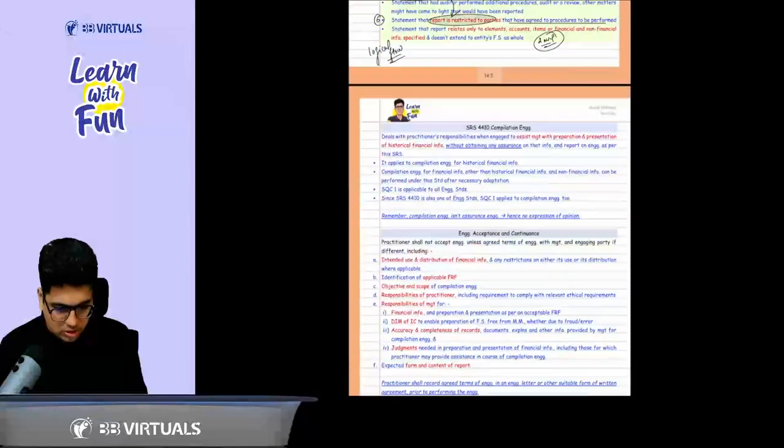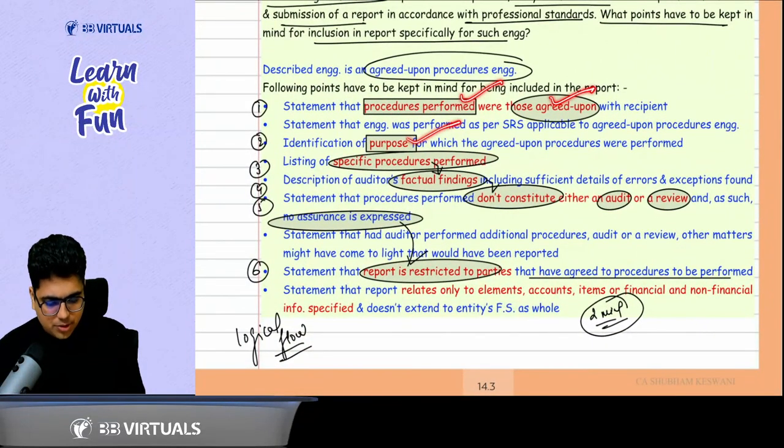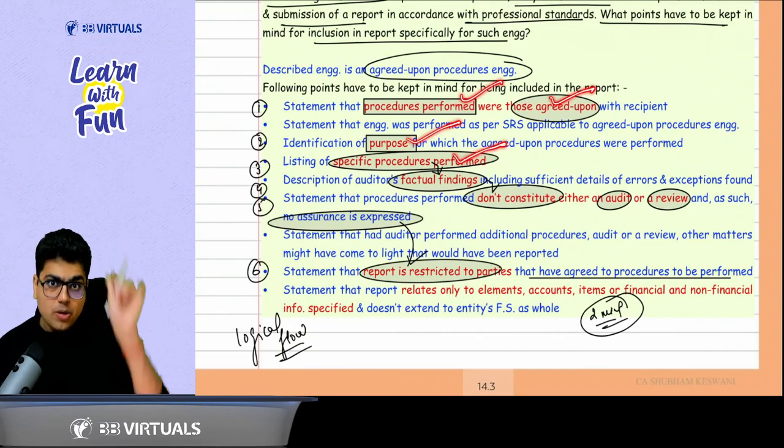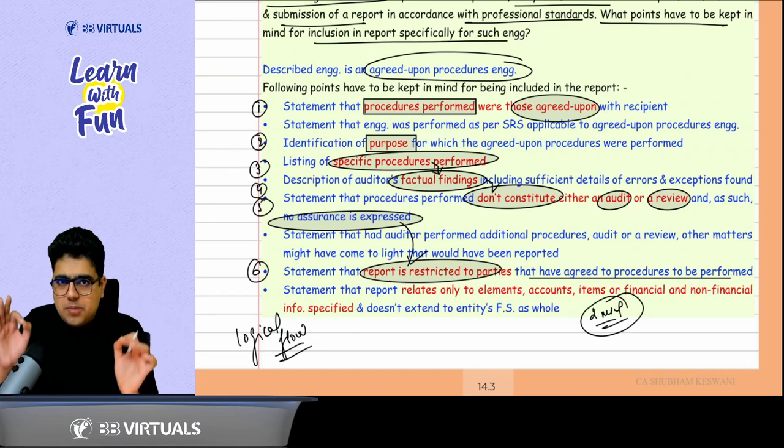And this is what we also discussed at the end. Procedures performed are agreed upon. Purpose of agreed upon procedures, specific procedures performed. Based on the procedures performed, what are the factual findings? Plus tell it is neither audit, neither review. So no assurance expressed. And lastly, report is restricted to the people who have agreed with the audit procedures.